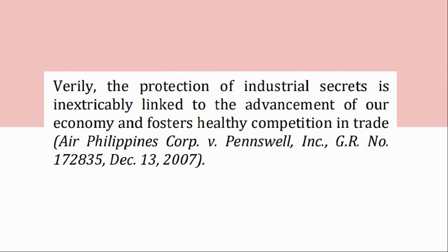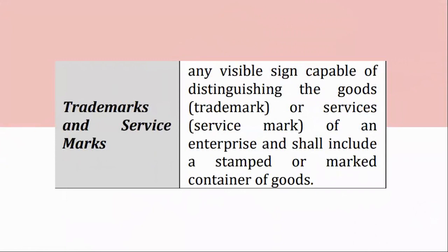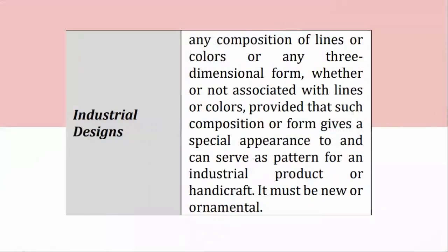Intellectual Property Rights Defined. Copyright and related rights exist over original and derivative intellectual creations in the literary and artistic domain, protected from the moment of their creation. Trademarks and service marks: any visible sign capable of distinguishing the goods (trademark) or services (service mark) of an enterprise, and shall include a stamped or marked container of goods. Geographic indications: indications which identify a good as originating in a territory of a member of the agreement, or a region or locality in that territory, where a given quality, reputation, or other characteristic of the good is essentially attributable to its geographical origin. Article 22, TRIPS Agreement.